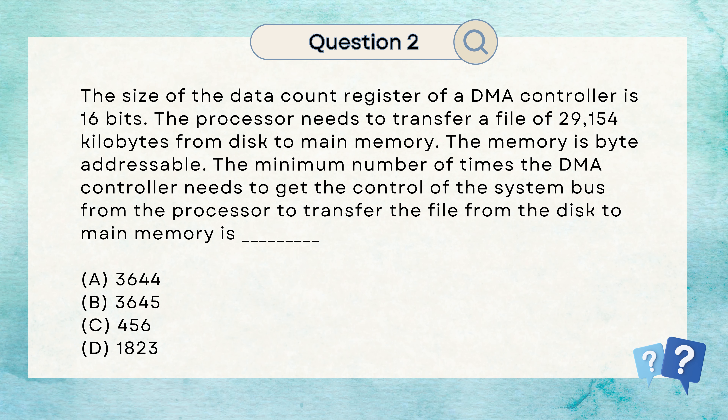Let's read the question. The size of the data count register of a DMA controller is 16 bits. The processor needs to transfer a file of 29154 KB from disk to main memory. The memory is byte addressable.